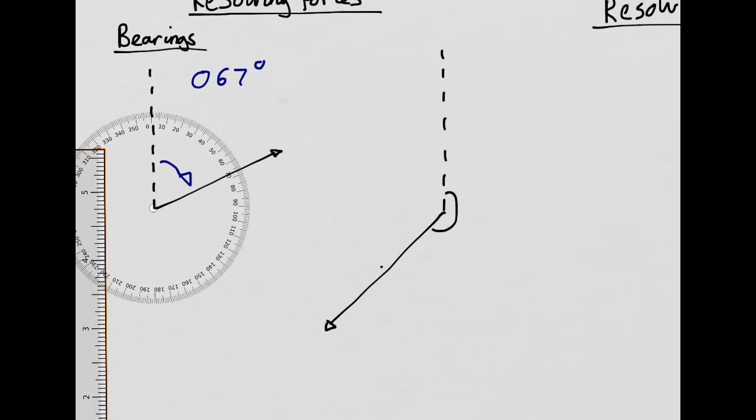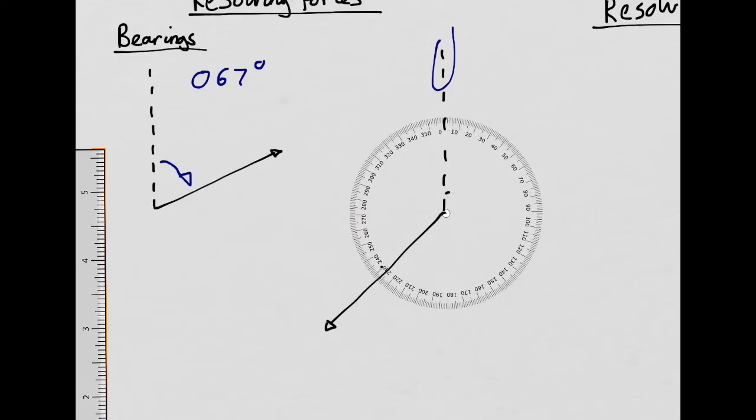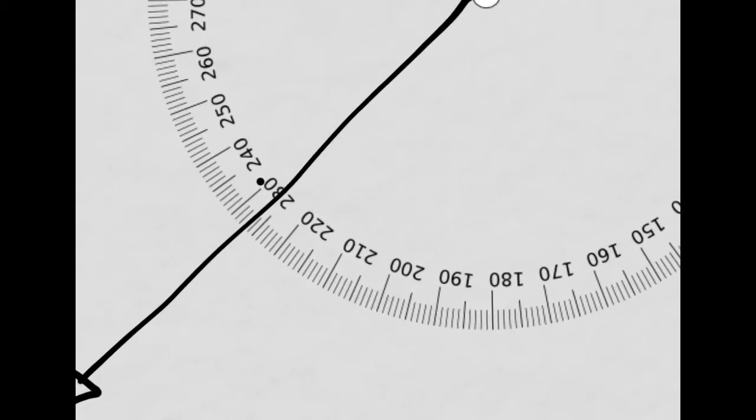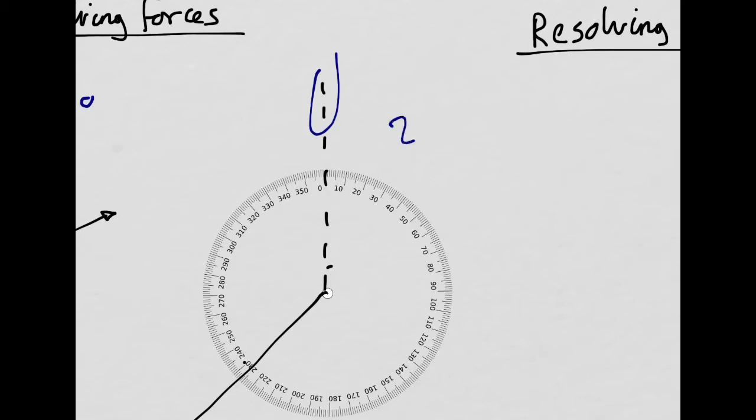What about this more complicated case then? If I wanted to find the direction of this one, then I need to figure out its direction, again, clockwise from the north. The dashed line represents the north. Now I'm just going to move my fancy protractor over here. Let's have a look at the direction of it. So it's 227 degrees. That's the bearing of it.